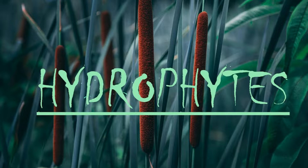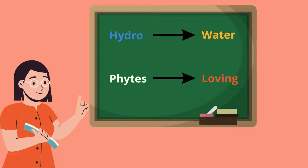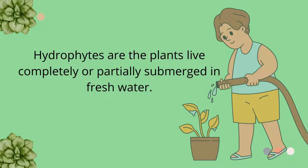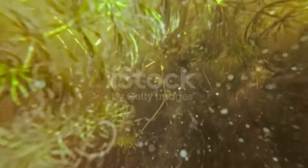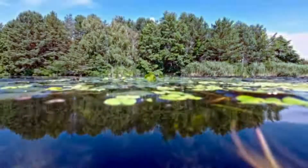Let's start with hydrophytes. 'Hydro' means water, 'phytes' means loving, so hydrophytes are water-loving plants. These are the plants which live completely or partially submerged in fresh water. Since they live in water, they do not face the problem of water shortage.